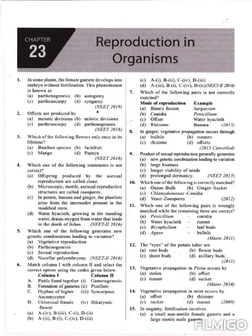Question four, the correct option is C. Next question: which one of the following generates new genetic combinations leading to variation? The options are vegetative propagation, parthenogenesis, sexual reproduction, and polyembryony. Only sexual reproduction produces variation because the male and female gametes fuse together, so the progeny gets a combination of both parents. The correct option is C — sexual reproduction.